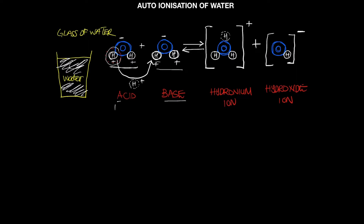The second molecule behaves as a base — it will accept that proton. Looking at the products: the proton that was donated forms the ionic product we call the hydronium ion, and the remnant of the water molecule that donated the proton becomes the hydroxide ion. So there is an ionic product formed.